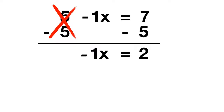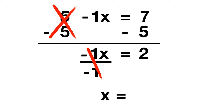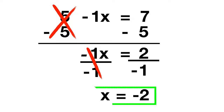7 minus 5 gives you 2. Now all that's left is cancelling out the negative 1x. To cancel that out, we can just divide by negative 1. That'll cancel out the negative 1s, leaving us with just x. On the other side of the equation, we take our 2 and divide by negative 1 as well, which gives us negative 2.